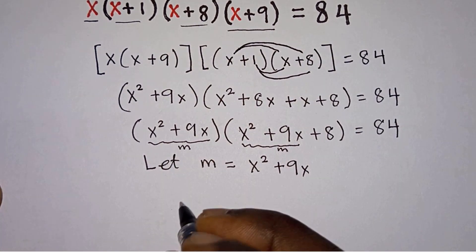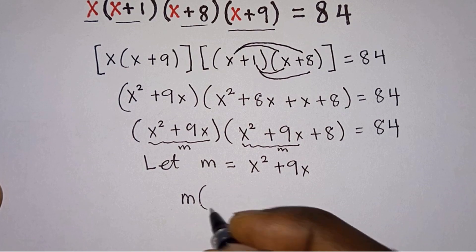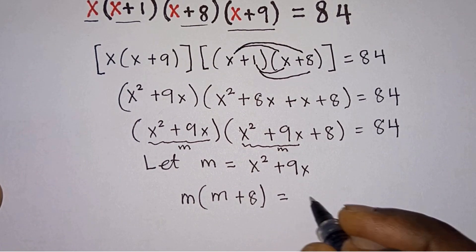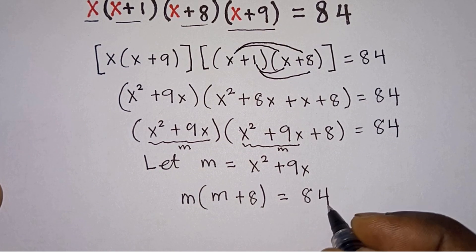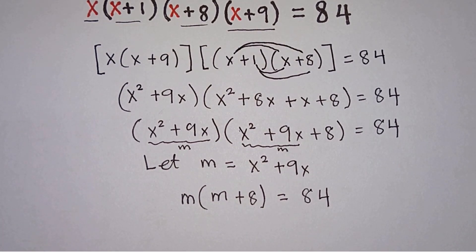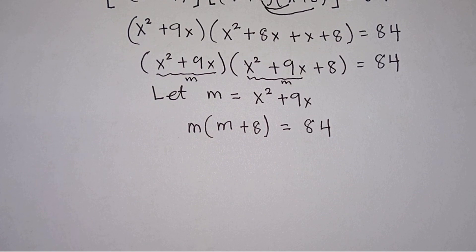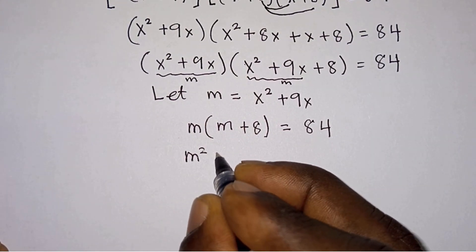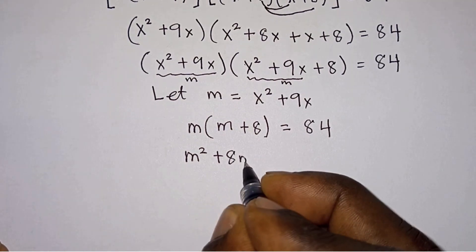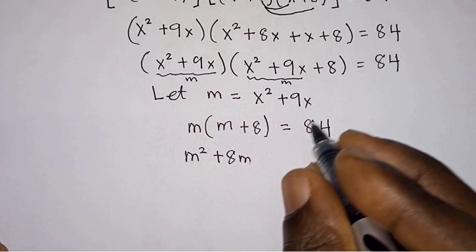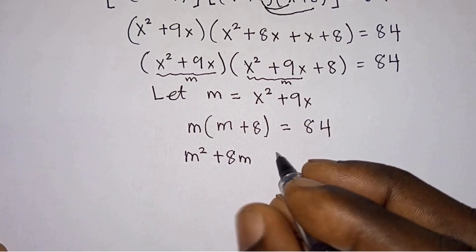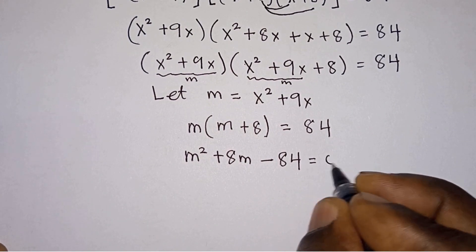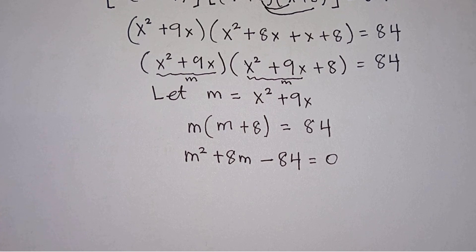So from here we have m times m plus 8 is equal to 84, and now the equation has become very simple to solve. Distributing m, we have m squared plus 8m, then bringing 84 to the left we get minus 84 equals zero — a quadratic equation.